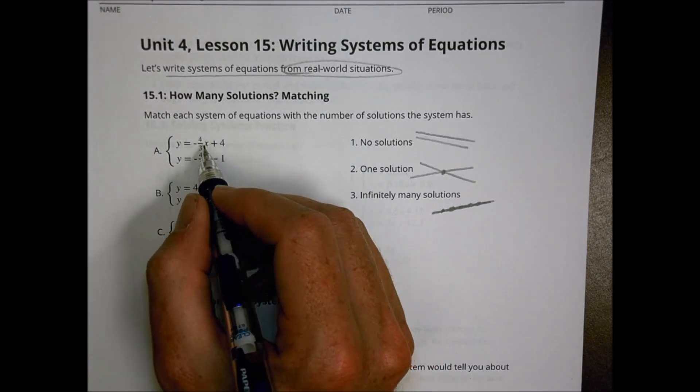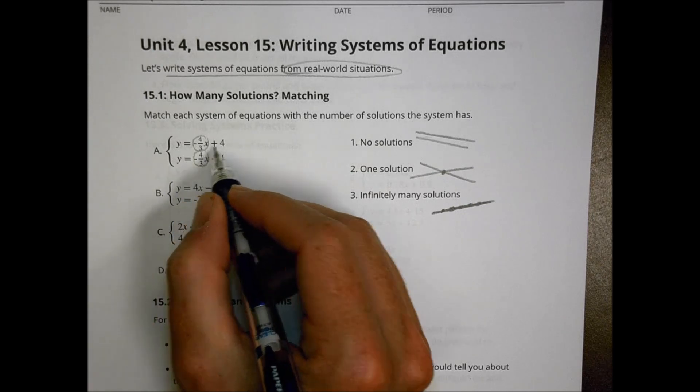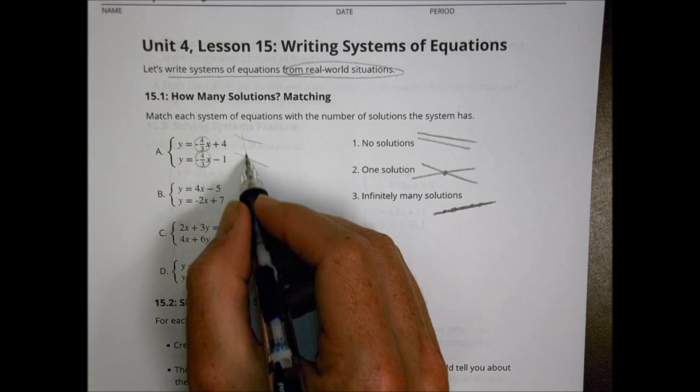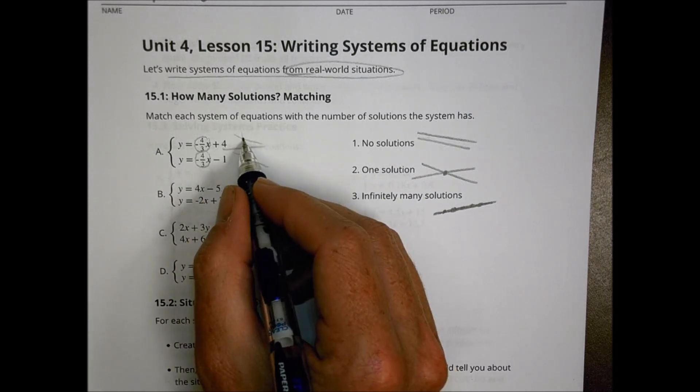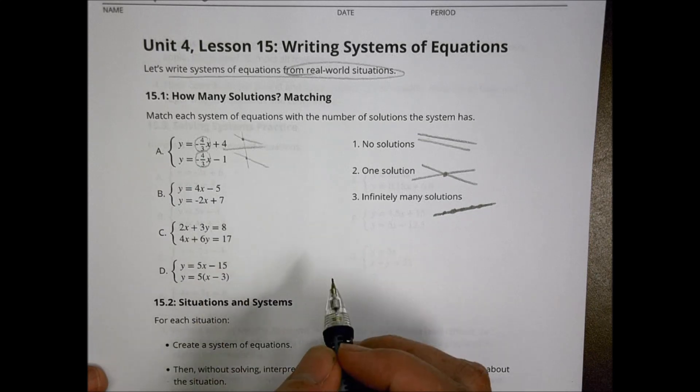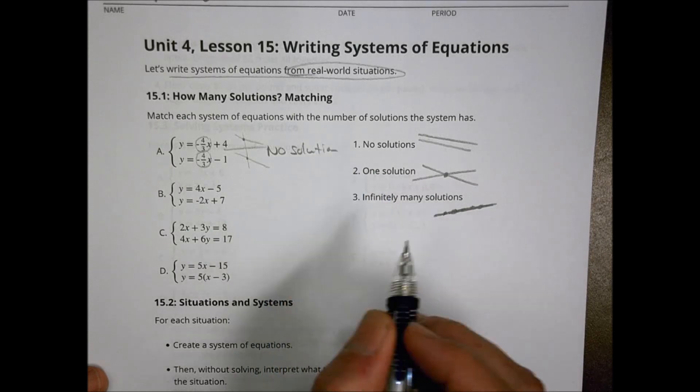When we first look at this first one, we see we have the same slope, which means they're going the same direction. In this case they're negative and negative, but a different starting point. One is starting at y equals plus 4 and one is starting at y equals negative 1, which means they're never going to cross. So this case here would have no solution for letter a.